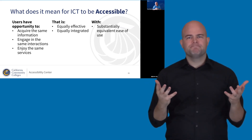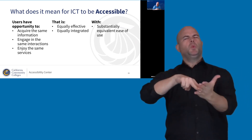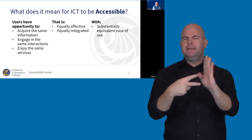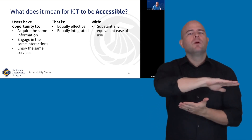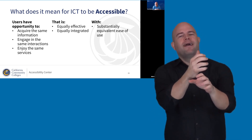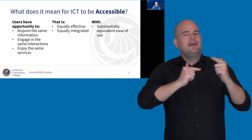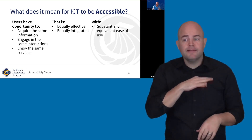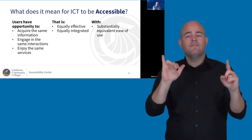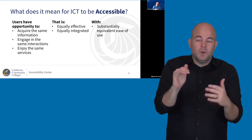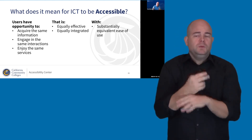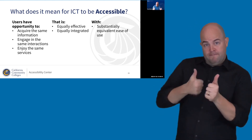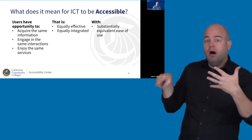At a higher level, what does it mean for our ICT to be considered accessible? If something is accessible, all of our users are able to acquire the same information, engage in the same interactions at the same time, and enjoy the same services or benefits in a manner that is equally effective, equally integrated, and with substantially equivalent ease of use. You may have an inaccessible system, but if you have an alternate means of access meeting all these criteria, it would be considered accessible as well.